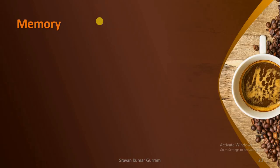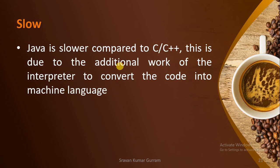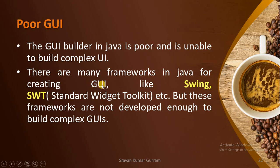Let us see the disadvantages of Java. First is memory. This is the major problem with Java. Java consumes more memory compared to C and C++. Java is also slower than C and C++ due to the additional work of the interpreter to convert code into machine language. Poor GUI is another disadvantage. If you want to develop GUI-related applications — like buttons and labels — the facilities available in Java are poor, making it very difficult to build a complex user interface. There are frameworks in Java for creating GUI like Swing and SWT (Standard Widget Toolkit), but even these are not enough to build complex GUI applications.